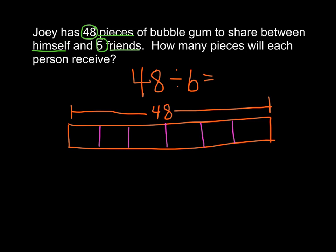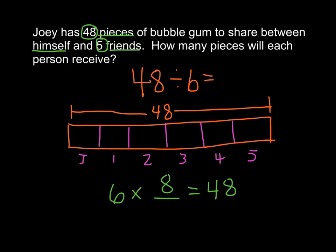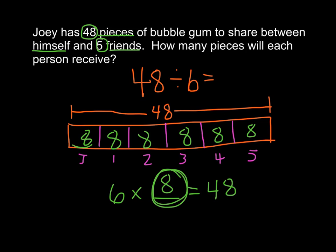Now I know there are six groups — one for Joey and one for each of the five friends. I know the total is 48, so I think about the multiplication fact: six times blank equals 48. If I put eight in each group, I know that six times eight is 48. So 48 divided by six is eight. The answer statement would say each person will receive eight pieces of candy, because eight is the number in each group. That's a 'one for you, one for you' situation.